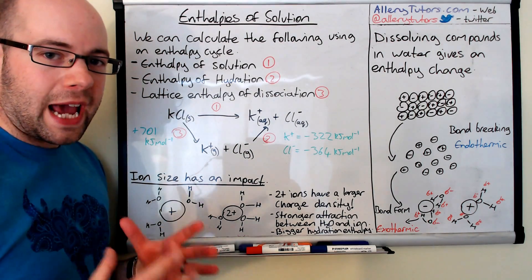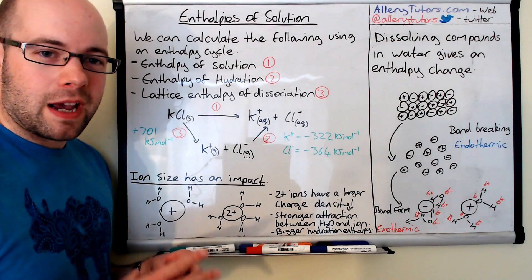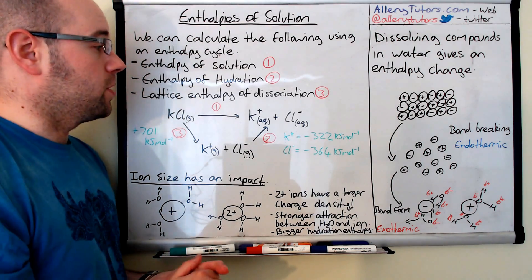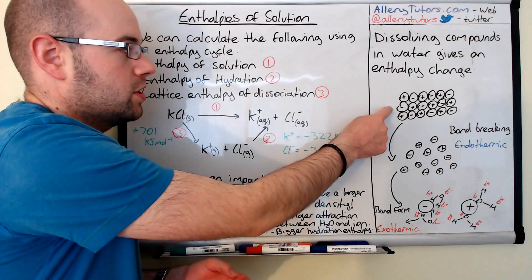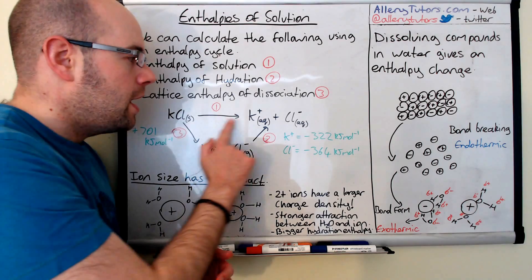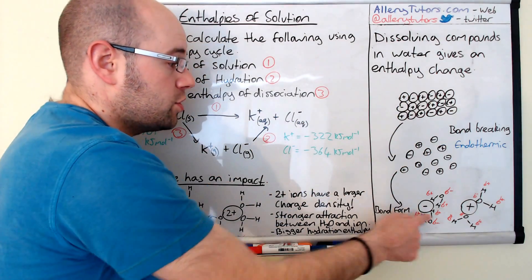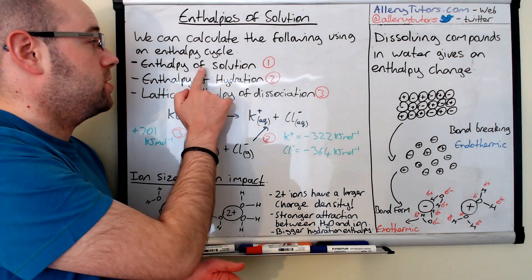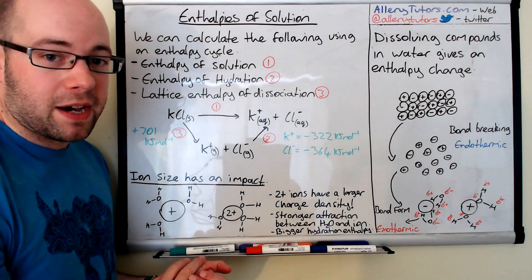So like I say we've got these terms here and we're going to learn how we can calculate these as well. Enthalpy of solution, enthalpy of hydration, and lattice enthalpy of dissociation. We can calculate them using something called an enthalpy cycle. This is very similar in principle to a Hess cycle except we don't have the basic parts like in a Hess cycle. So what I've done is I've written out the equation and for this example I've used potassium chloride.